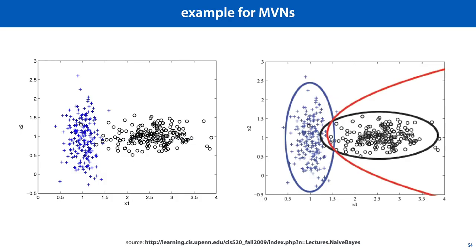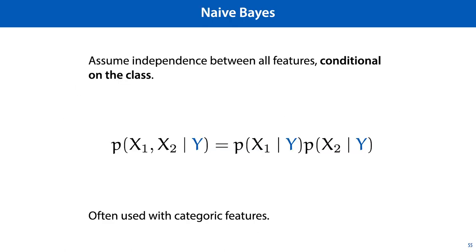Here's what that looks like using multivariate normal distributions. On the left we see a simple classification task with two classes. On the right we see two multivariate normal distributions represented by ellipses fit to these point clouds — the blue distribution fit to the pluses and the black distribution fit to the open circles. The red line is the resultant decision boundary, the set of points for which the class distribution is 50-50. For relatively low-dimensional data this works very well, but as the data grows in dimensionality, the number of points needed to accurately fit a multivariate normal distribution grows exponentially. So when the data is very high-dimensional, we often make the naive Bayes assumption.